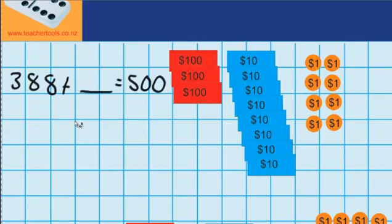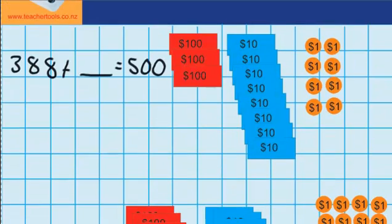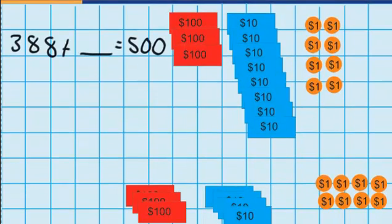Let's try another example. This time I've got $388 and I need $500, so I'm trying to work out how much more money I need to get from my bank account. Over here I've got my $388 all laid out.